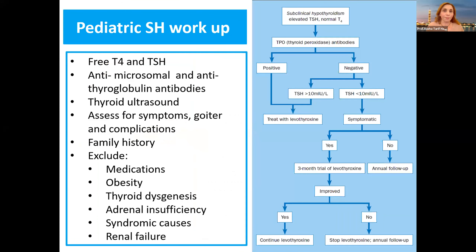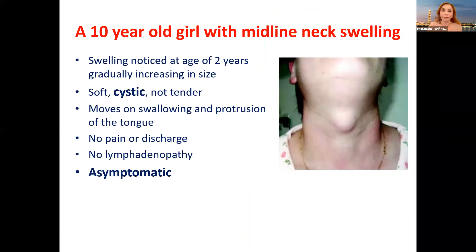This is the pediatric subclinical hypothyroidism workup — it applies to adults as well. The same rule: thyroid function, antibodies, ultrasound. Assess for symptoms and family history. Don't forget to exclude medications, obesity, thyroid dysgenesis, adrenal insufficiency, syndromic causes like Turner and Down, and finally chronic illness like renal failure — which could present with abnormal thyroid function and subclinical hypothyroidism.